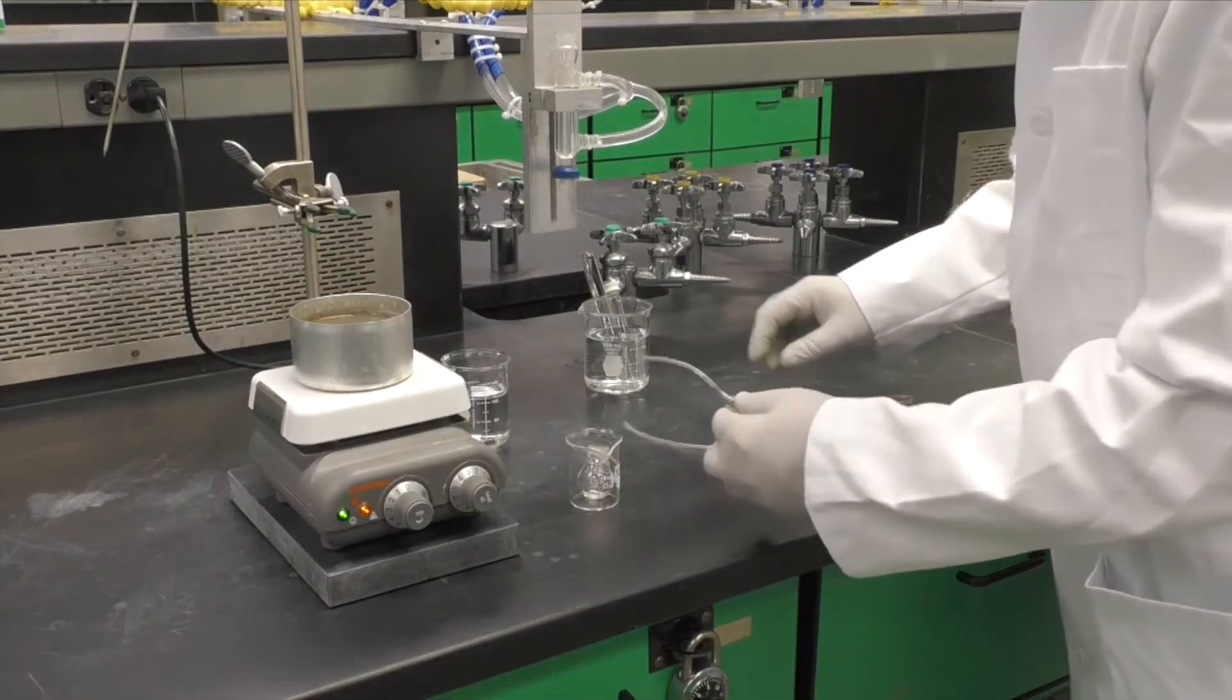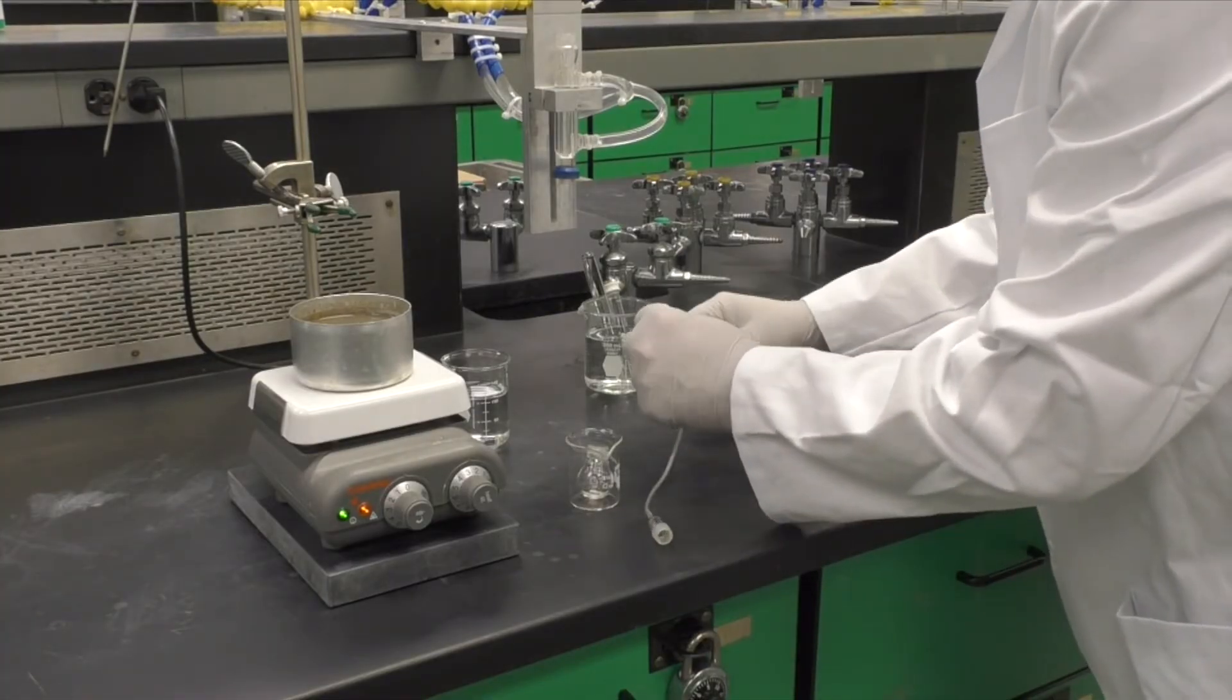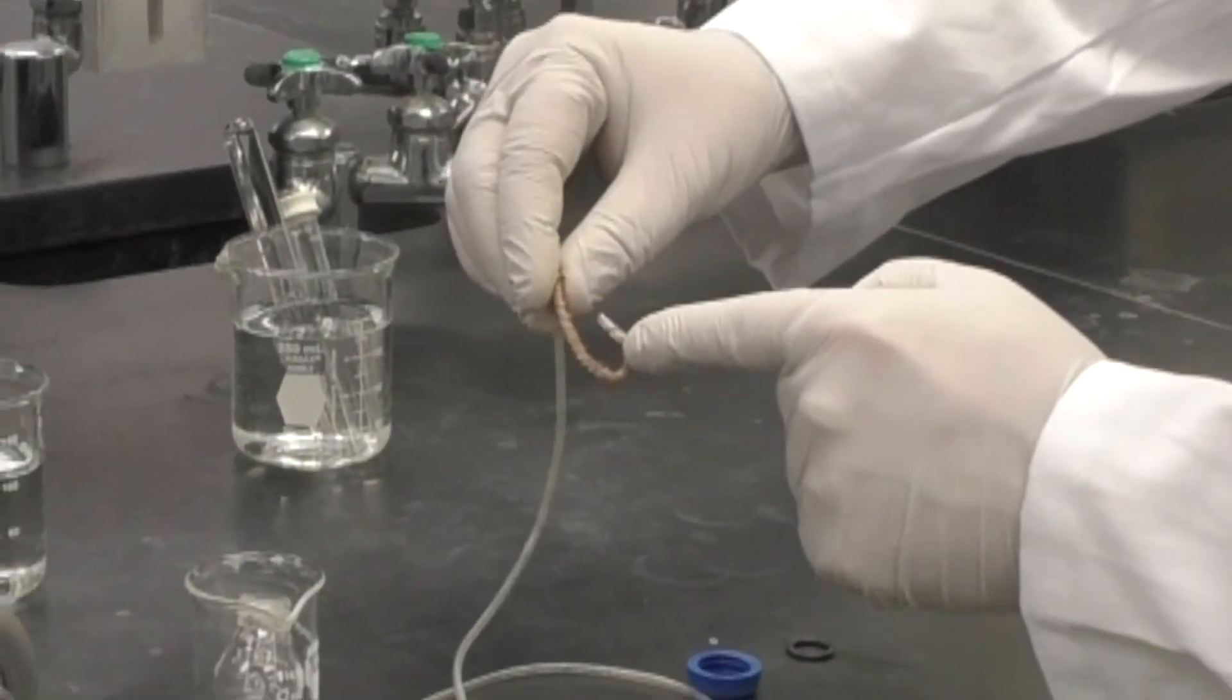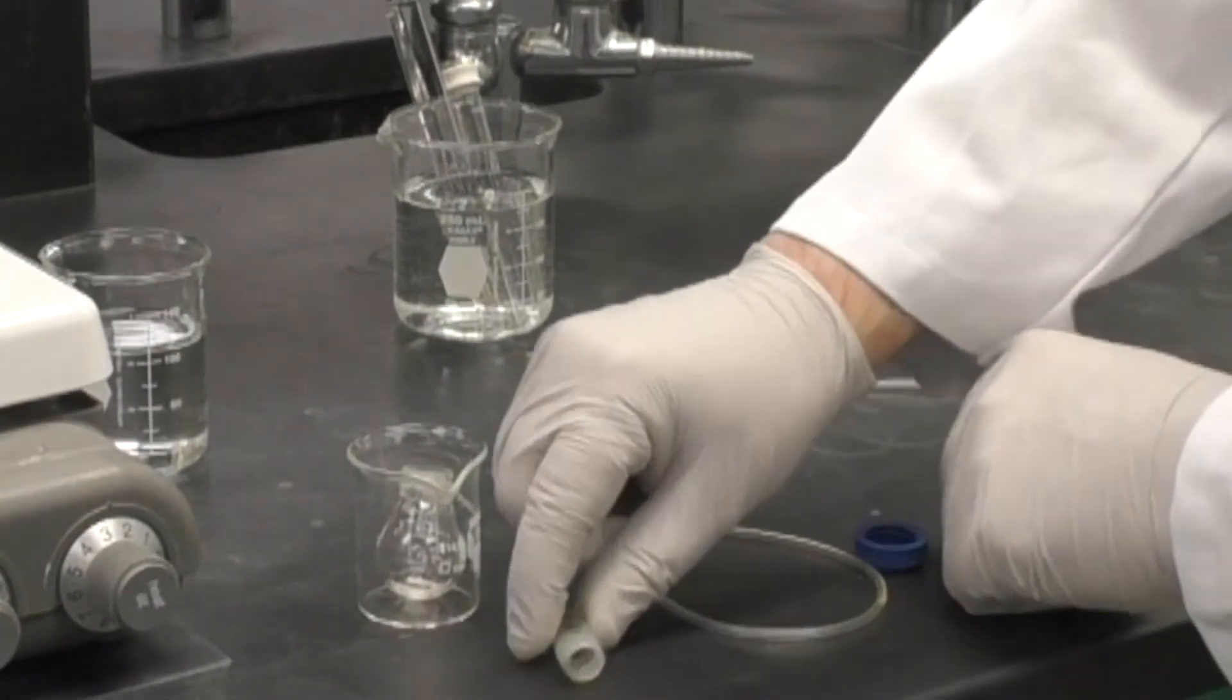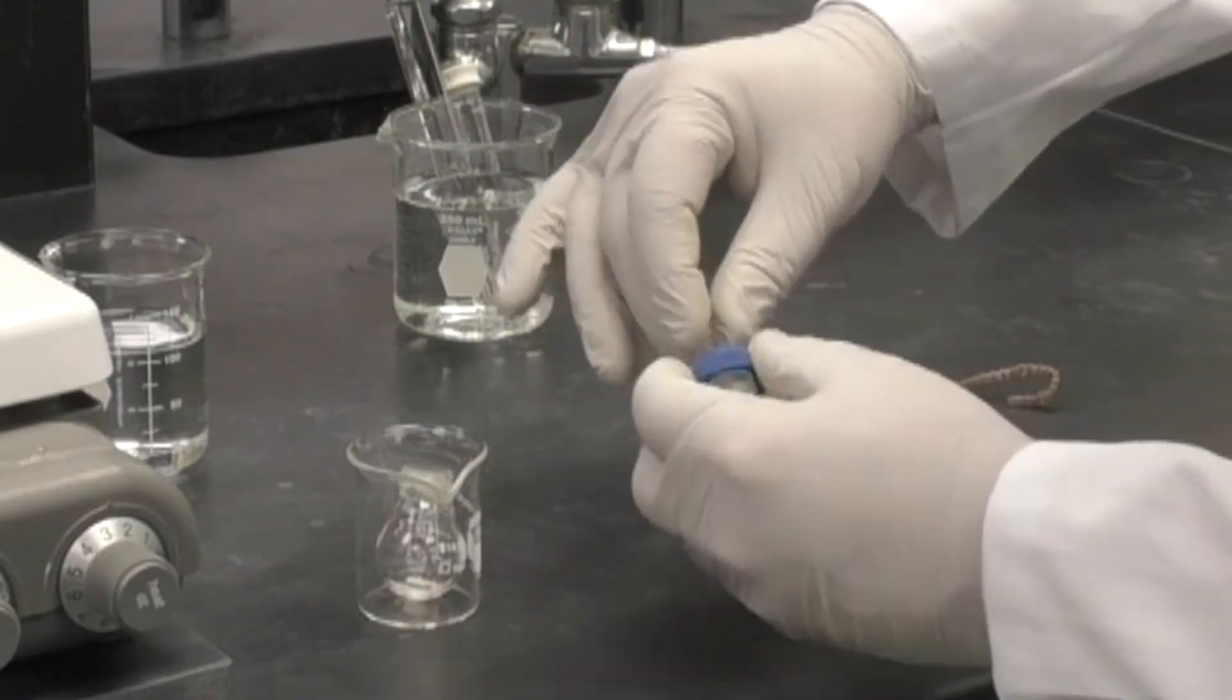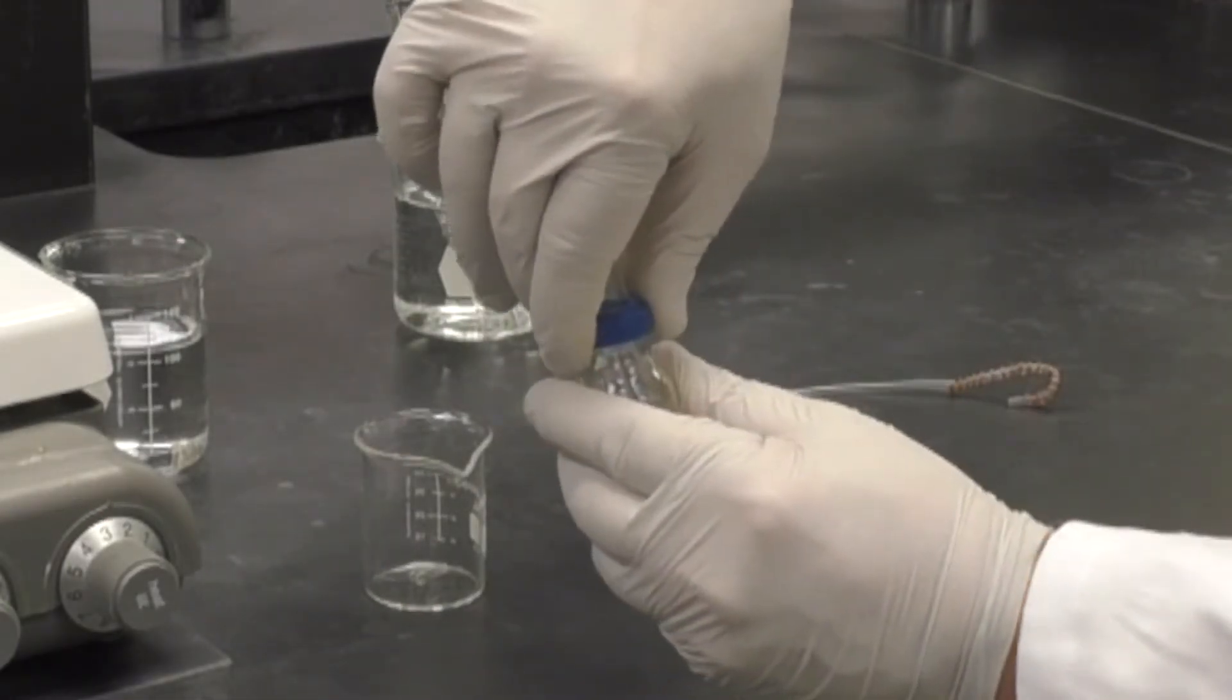To complete the setup, first check the Tygon tubing attached to the collection apparatus for any melted spots, holes, or any other type of damage. Make sure the copper-wrapped end forms a nice J shape. Then slide a blue ring over the glass end, followed by an O-ring, then slide the round bottom flask on and screw the blue ring tightly onto your flask.